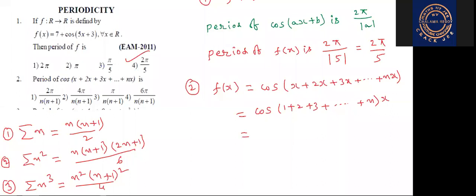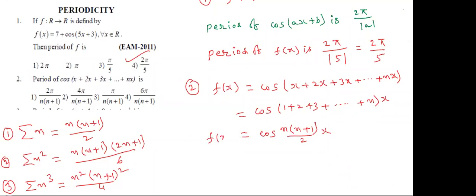Now, 1 plus 2 plus 3 plus and so on up to n is the sum of n natural numbers. The formula is n(n+1) by 2, multiplied by x. By observing the function we determine that the A value is n(n+1) by 2, and the function is in the form of cos(Ax) or cos(Ax + B). The formula for period is 2π by mod A.